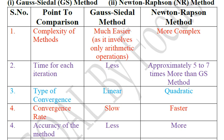Friends, if we talk about convergence rate, GS method is slow. But in case of Newton-Raphson method, convergence rate is faster.